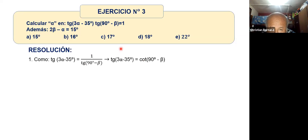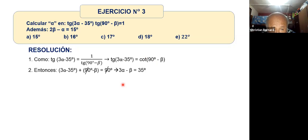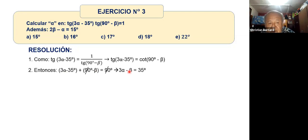La tangente es igual a la cotangente solamente cuando estos dos ángulos suman 90 grados. Sumamos los dos ángulos igual a 90. Este 90 se anula con este 90. Menos 35 pasa como más 35. Me queda la primera ecuación: 3 alfa menos beta igual a 35.